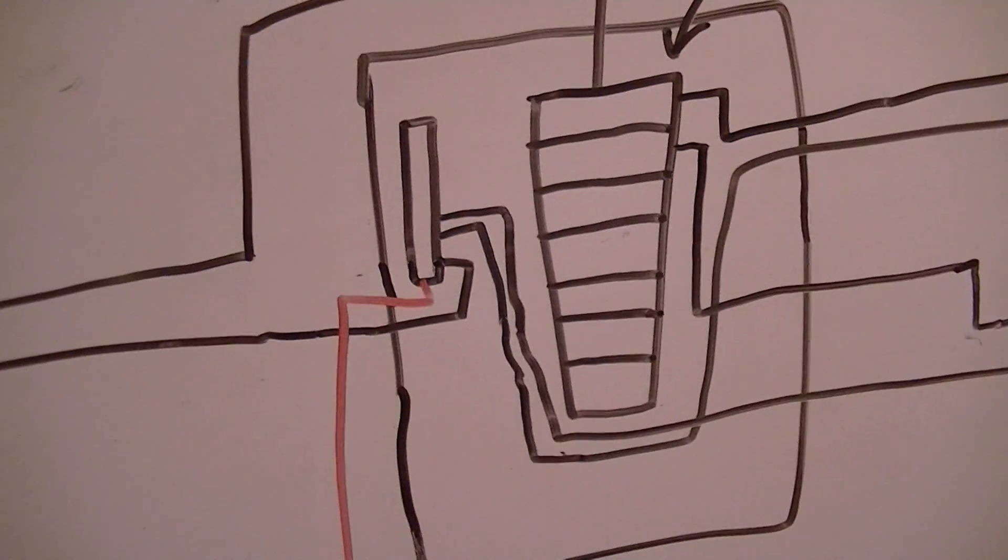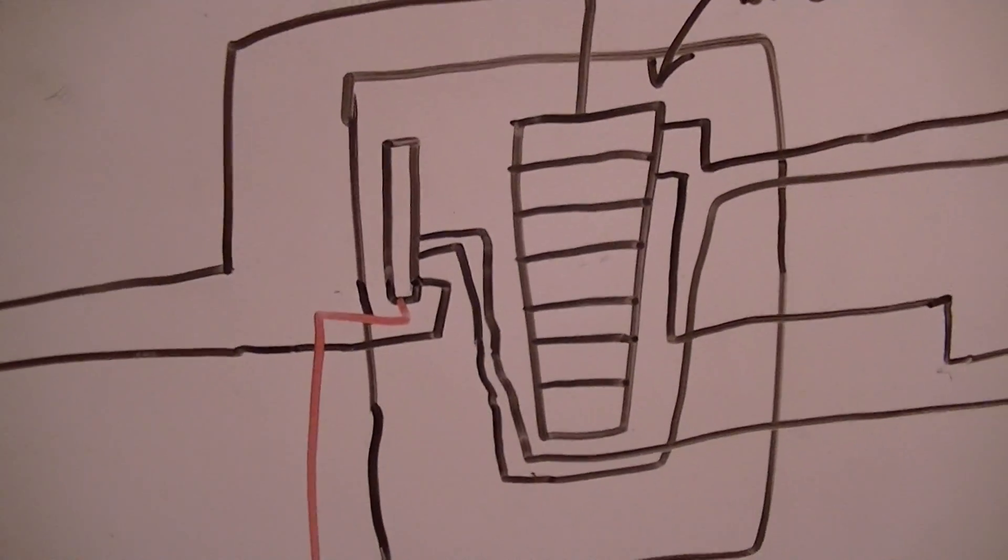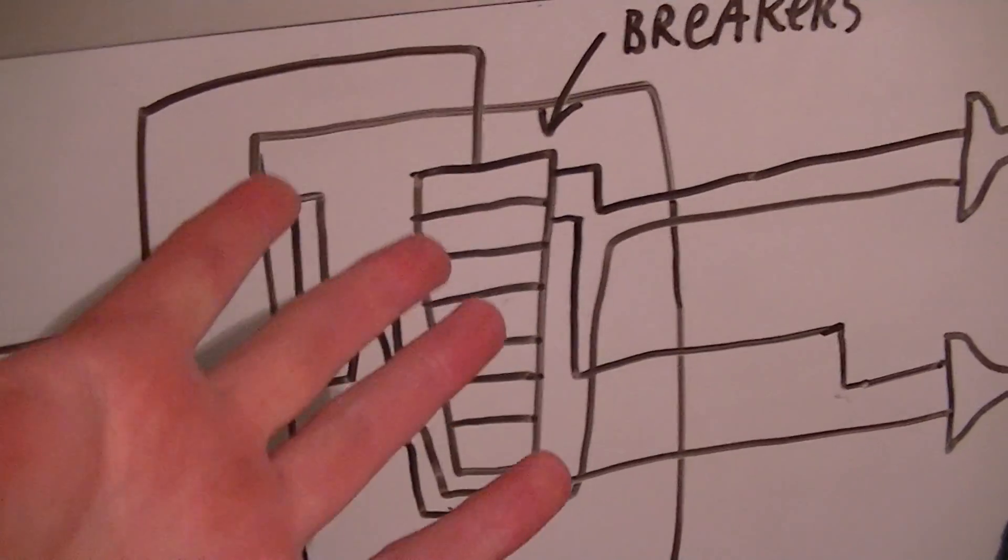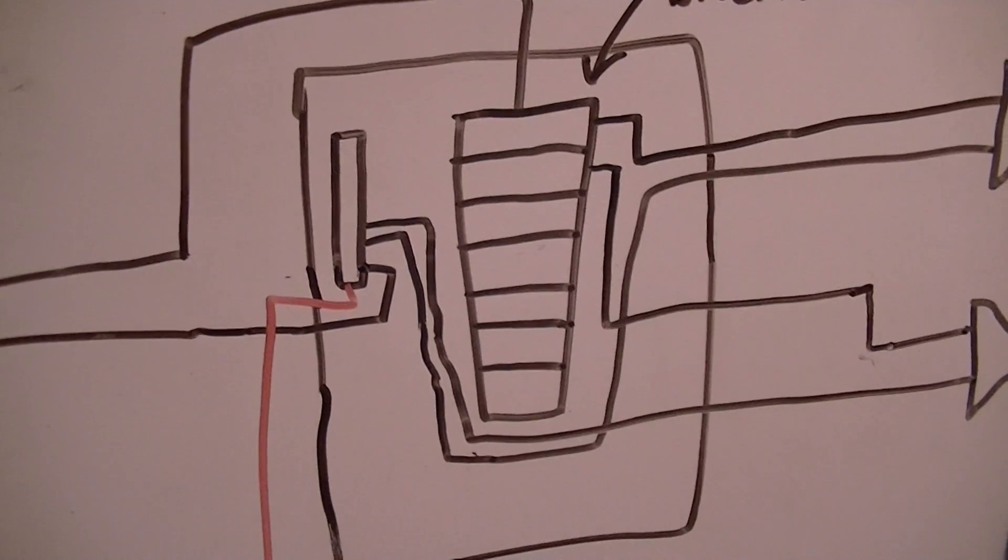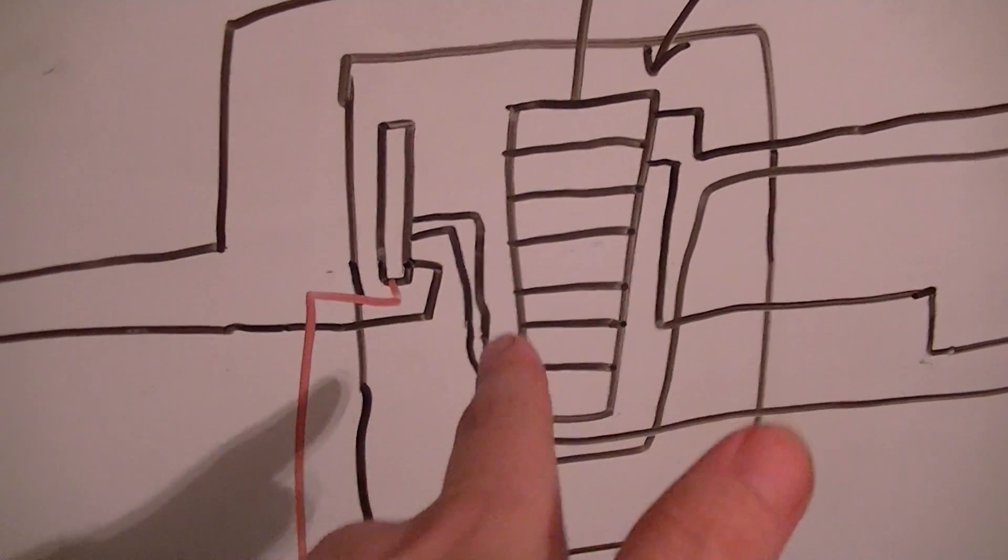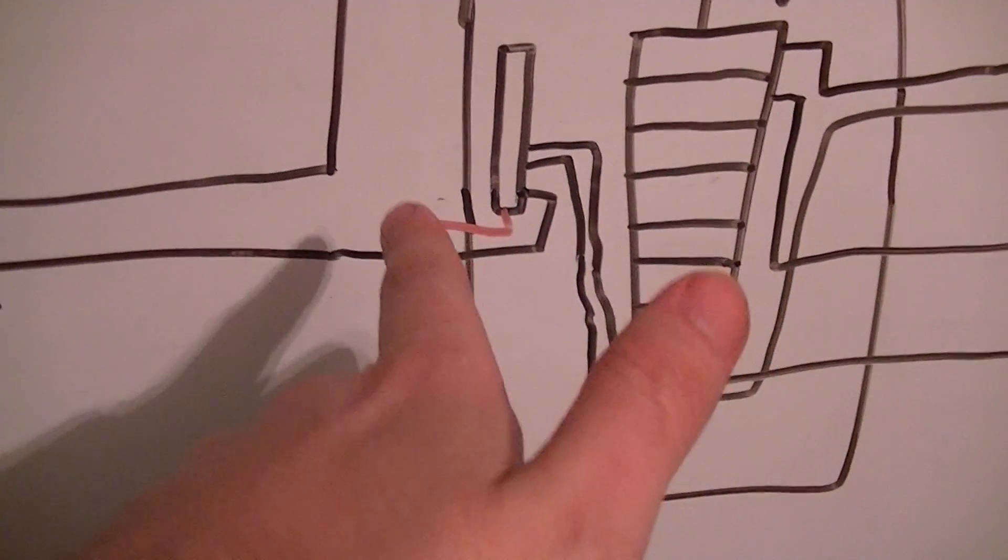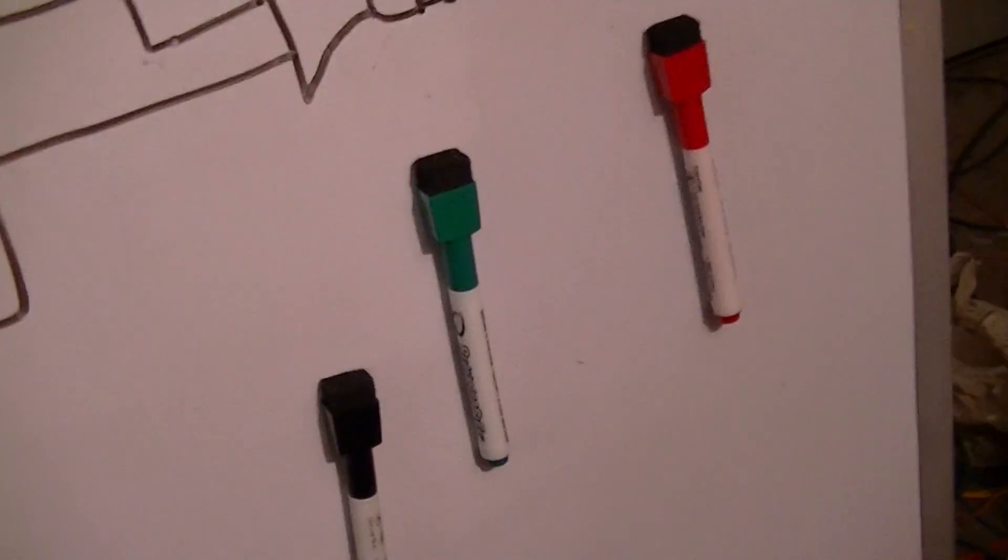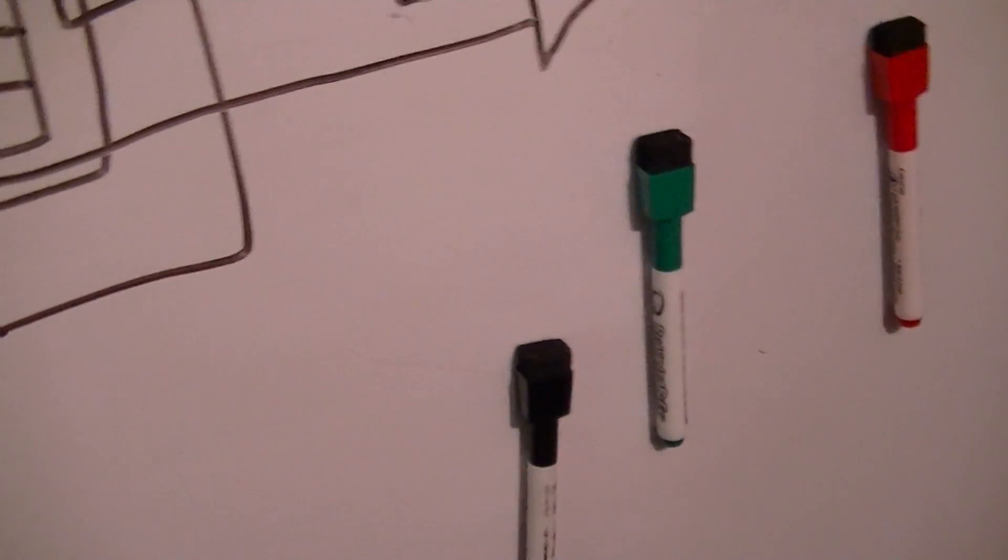As a result, the thing about a typical residential breaker panel - this is a very simplistic 120 volt example - is that the neutrals are always tied to ground, which is why I've drawn the grounds in red to emphasize this.